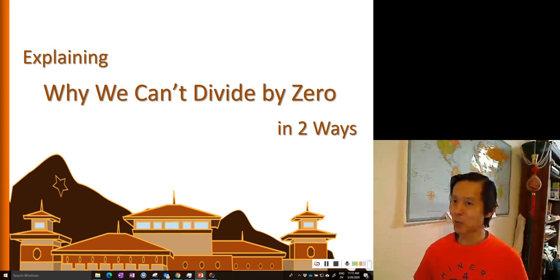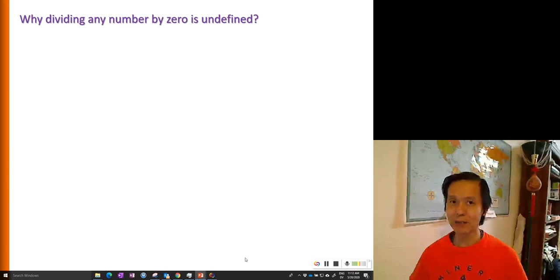I've created this video to explain why we can't divide by zero in two ways using multiplication. Have you ever wondered why dividing any number by zero is undefined?